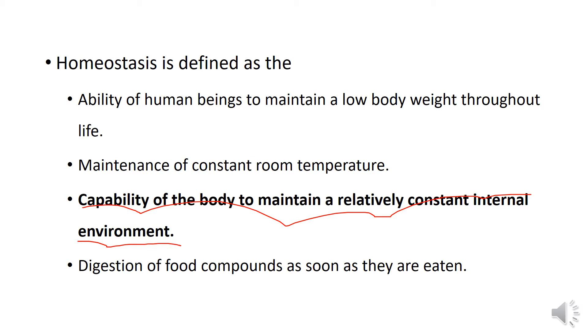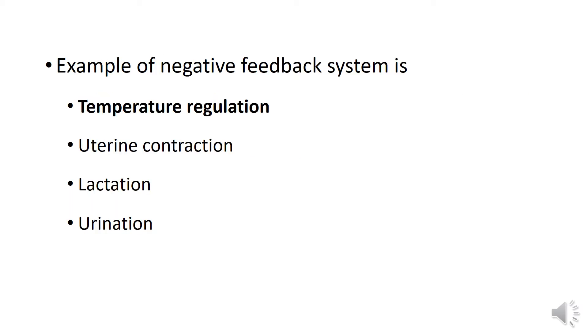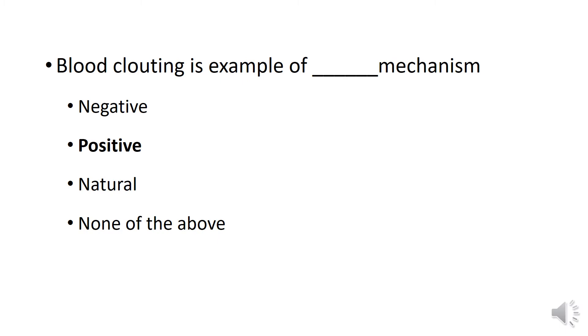The example of negative feedback system is uterine contraction, lactation, urination? No. The example of negative feedback mechanism is temperature regulation. Blood clotting is an example of positive feedback mechanism, not negative. So temperature regulation is negative, but when we talk about blood clotting, blood clotting is an example of positive feedback mechanism.